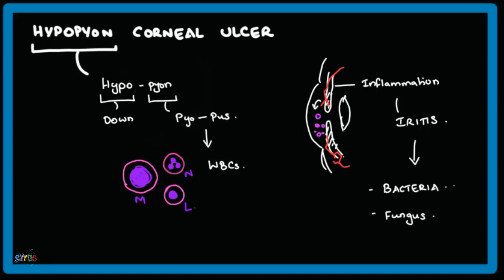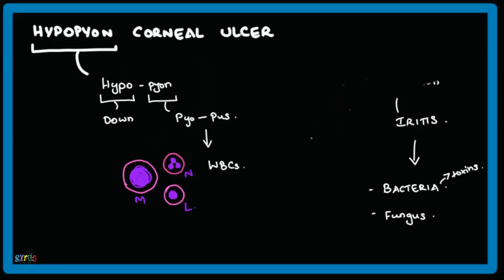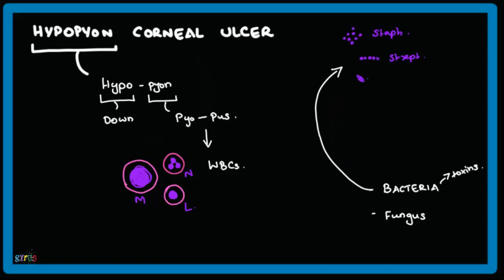Hypopion can be caused either by bacteria or fungus, and also by the toxins of the bacteria. Common bacteria involved are Staphylococcus, Streptococcus, Streptococcus pneumoniae, Neisseria gonorrhea, and Pseudomonas. Pseudomonas are gram-negative bacilli.